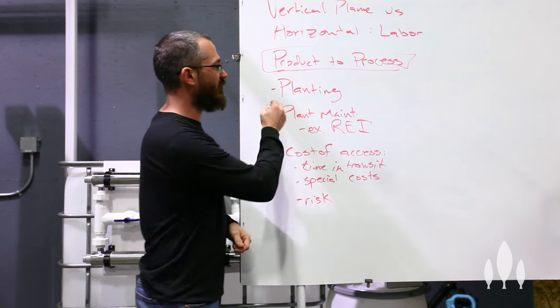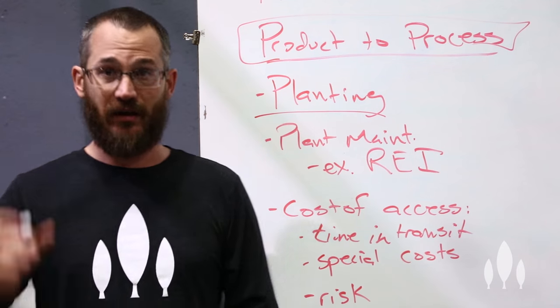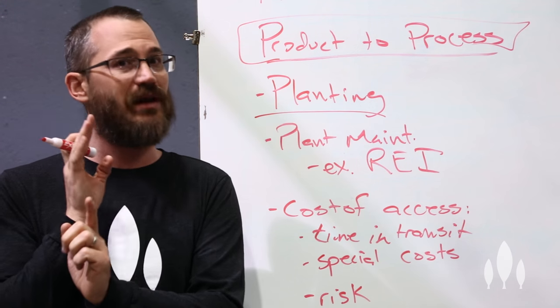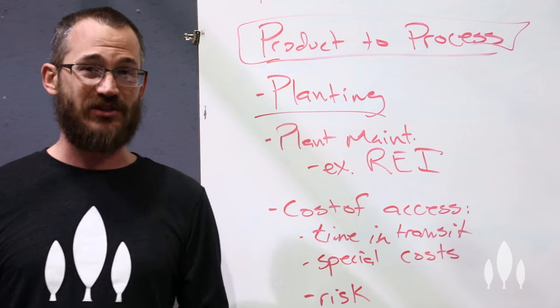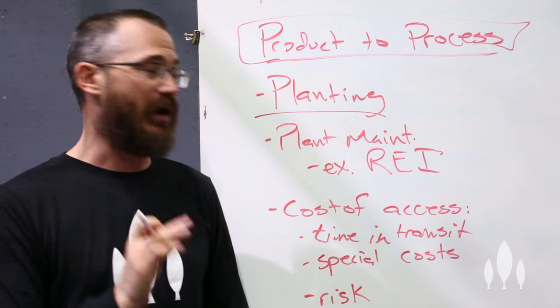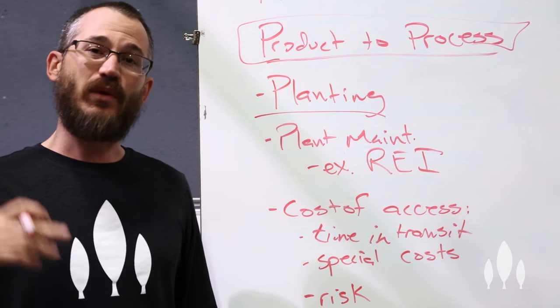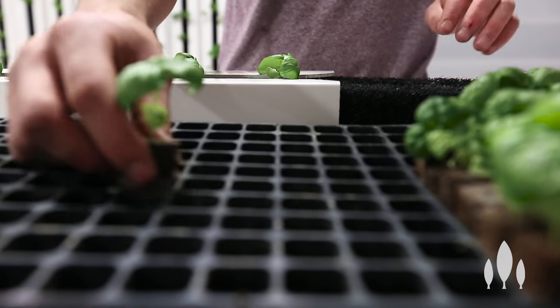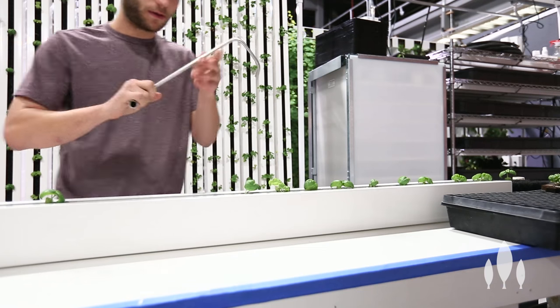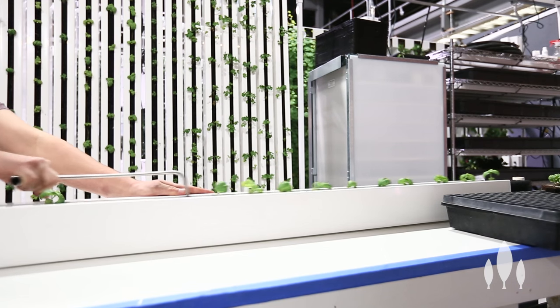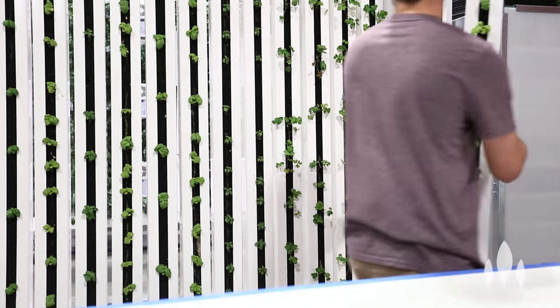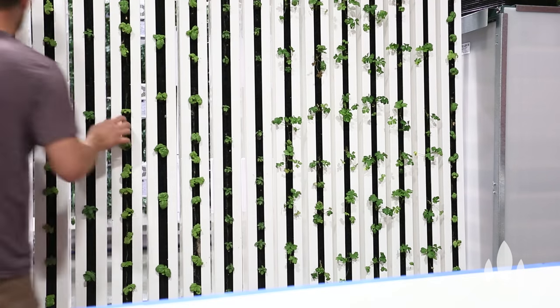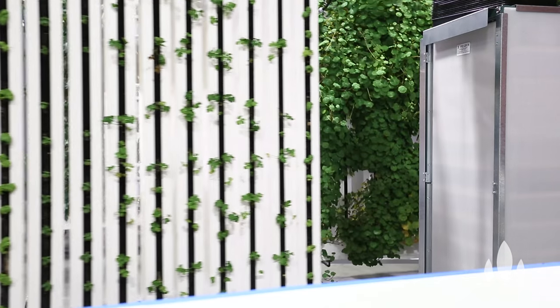So the idea here is that if we can take an entire zip rack, and most vertical plane production techniques allow us to move the equipment around, then we can move an entire rack with 30 towers on it, something like that, one person to a planting bench, plant all those towers, replace them and move them back out into the environment. It's very efficient from a labor perspective.